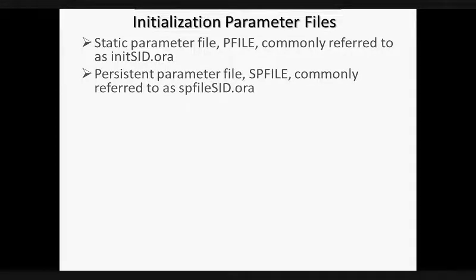The second file is the persistent parameter file, spfile, commonly referred to as spfile-sid.ora. Spfile is a binary file. This file is not meant to be modified manually and always resides on the server side. By default, the file is located in $ORACLE_HOME/dbs on a Unix server and has a default name in the format of spfile-sid.ora. Once the file is created, it is maintained by the Oracle server. The spfile provides the ability to make changes to the database persistent across shutdown and startup.